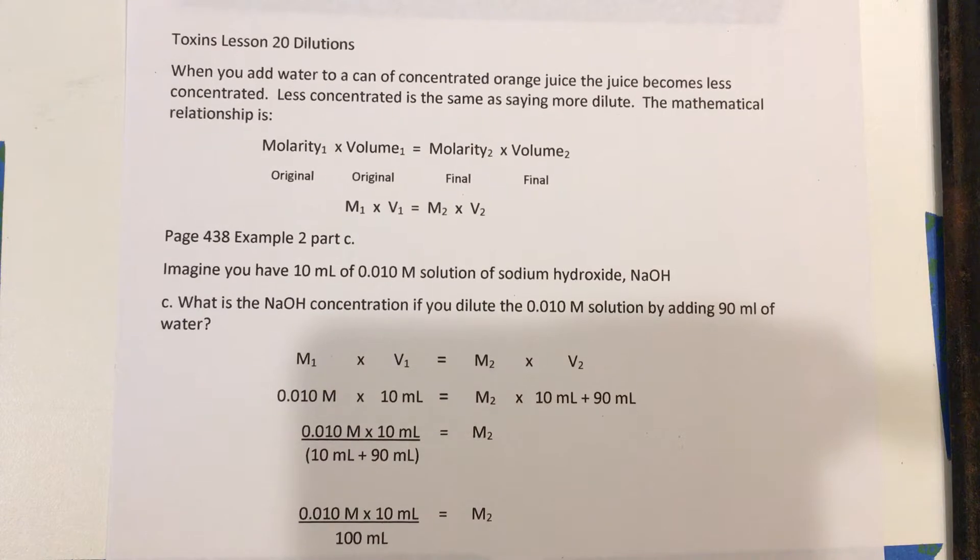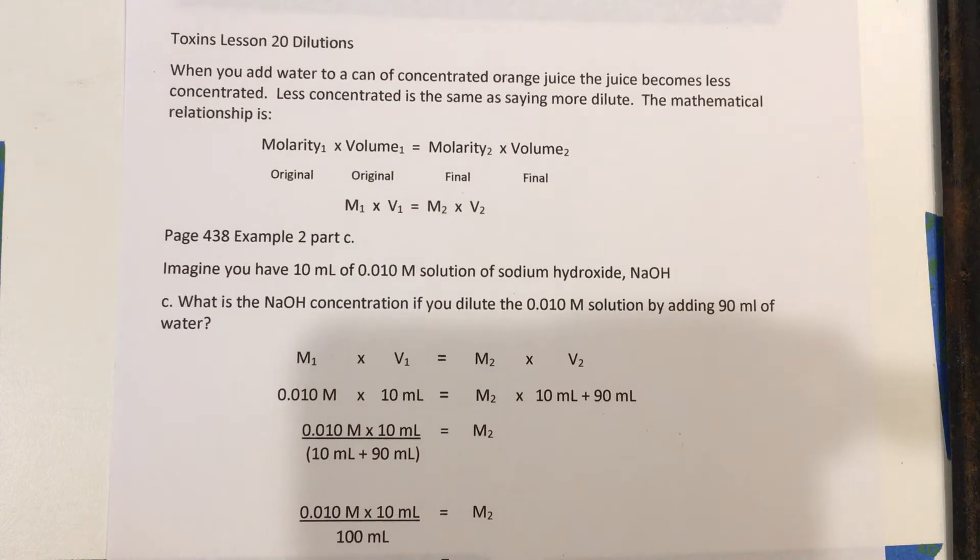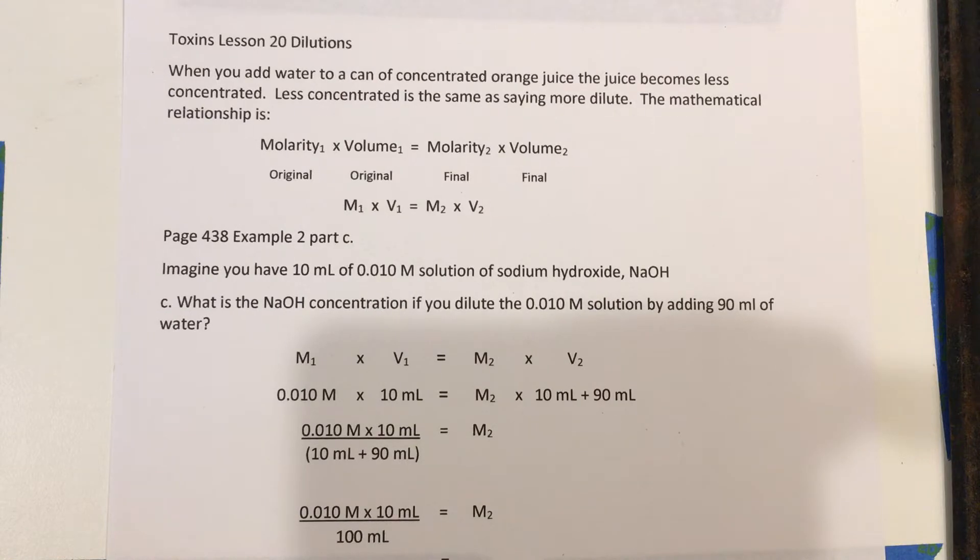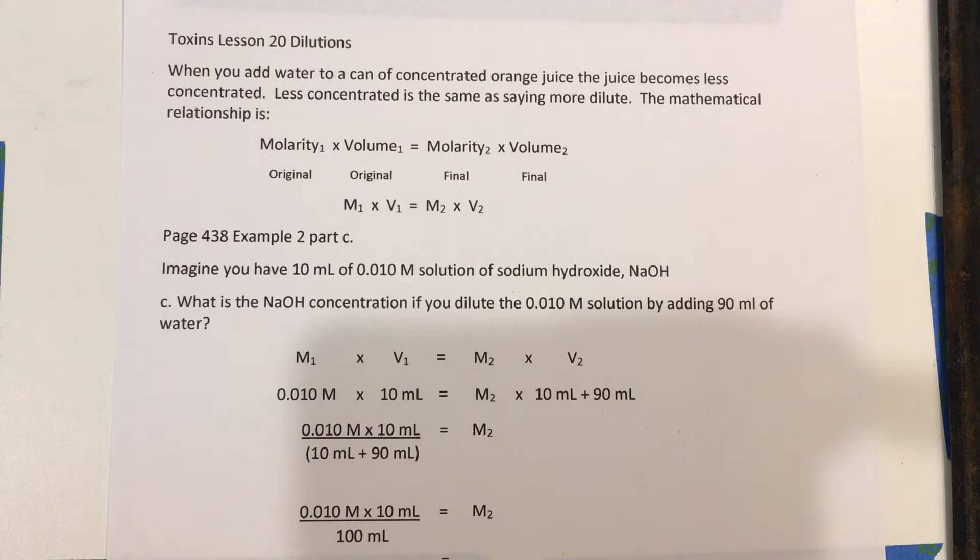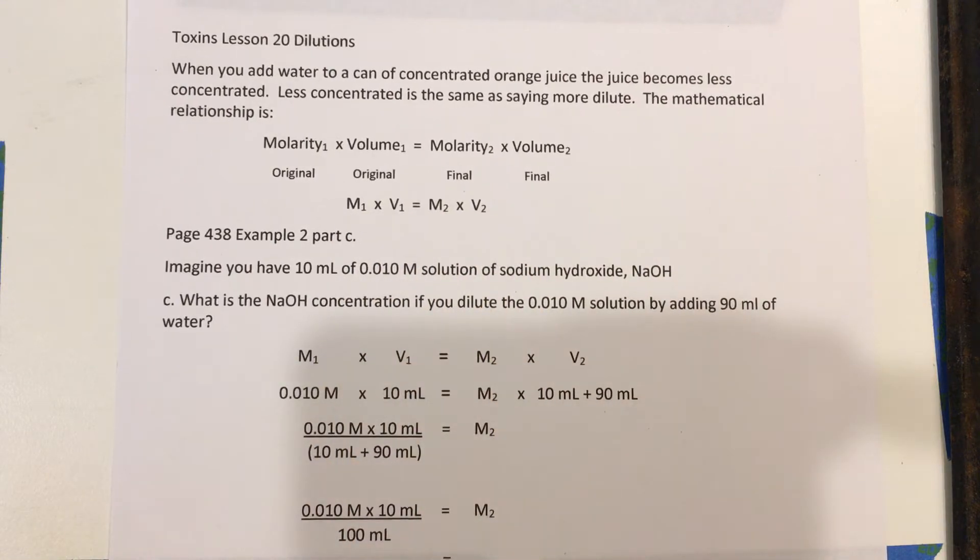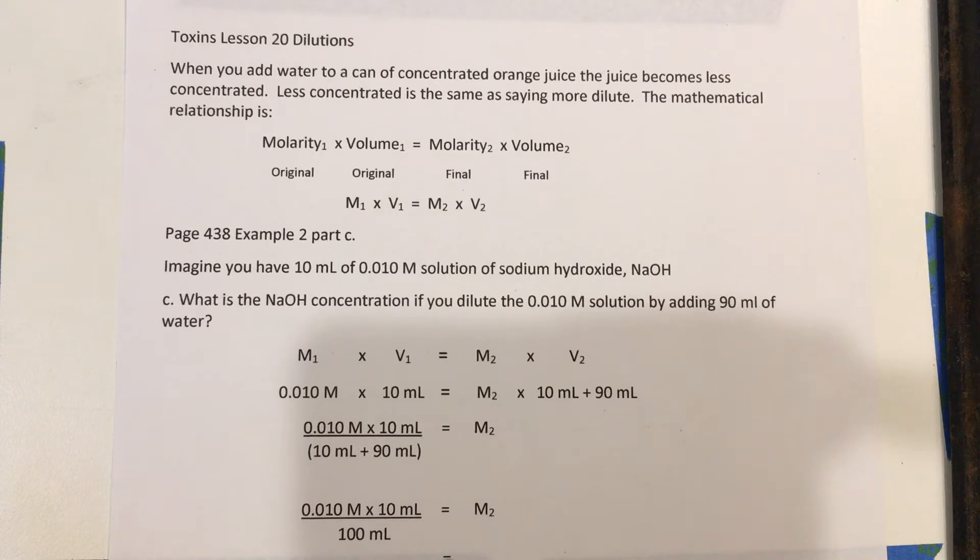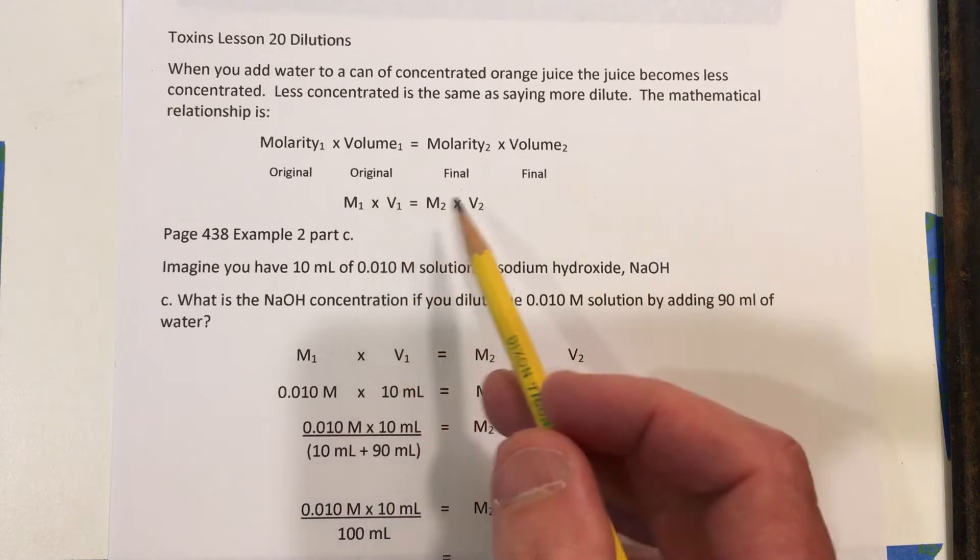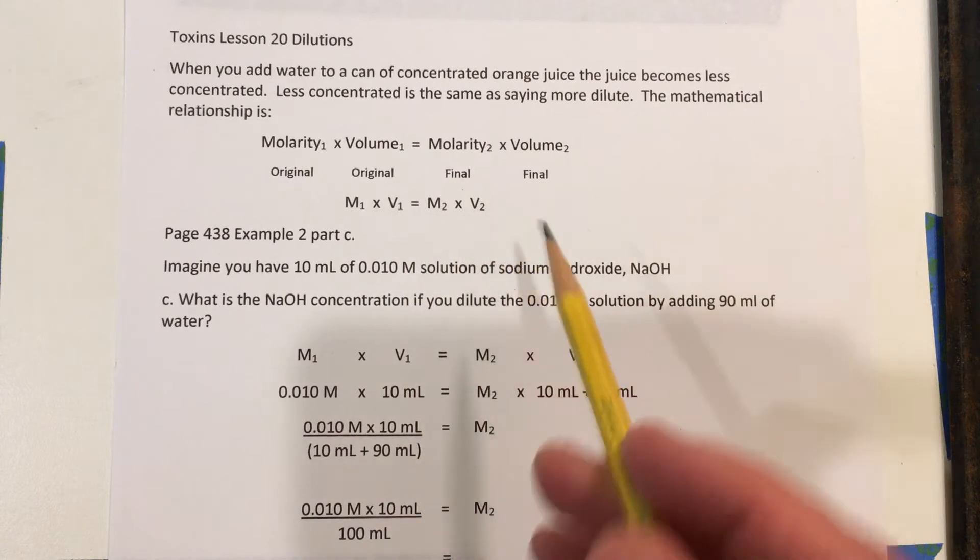Molarity 1, that first concentration or original concentration, times its original volume will equal the new molarity times the new volume. And most people just give the numbers like this: M1 times V1 equals M2 times V2. So this is again our original molarity, our original volume, our final molarity, and our final volume.